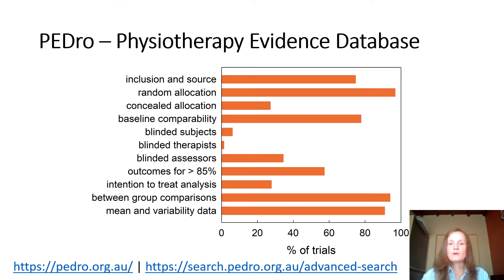Unfortunately, not all trials implement or communicate these important design features. Just 38% of trials evaluating physiotherapy interventions contain 6 or more design features known to reduce bias or improve clinical decision making. We need to understand these design features and be able to identify them quickly in articles reporting trial results in order to select and understand the best trial to answer clinical questions. So can you recognize a good trial a mile away?